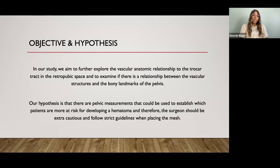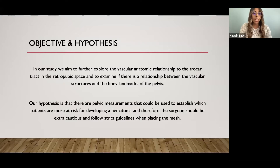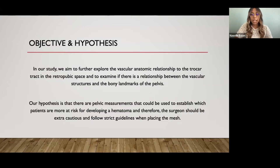For objective and hypothesis: our study aims to further explore the vascular anatomic relationship to the trocar tract in the retropubic space and to determine if there is a relationship between the vascular structures and the bony landmarks of the pelvis. Our hypothesis is that there are pelvic measurements that could be used to establish which patients are more at risk for developing a hematoma, and therefore the surgeon should be extra cautious and follow strict guidelines when placing the mesh. If we can find a correlation with these vessels and the measurements of the bony pelvis, this may represent a clinically useful measure.